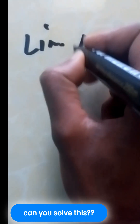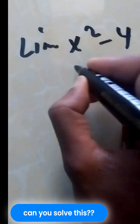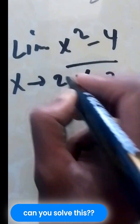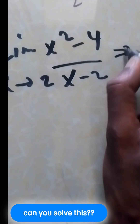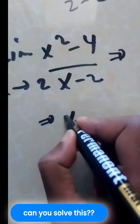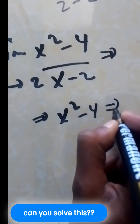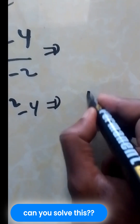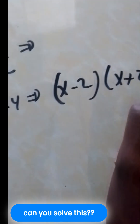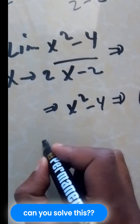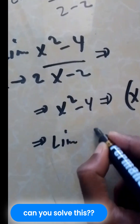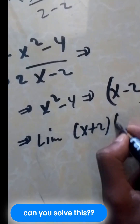We need to find the limit of (x² - 4)/(x - 2) as x tends to 2, using the factorization method. When we factorize the numerator x² - 4 by using difference of squares, we get (x - 2)(x + 2).